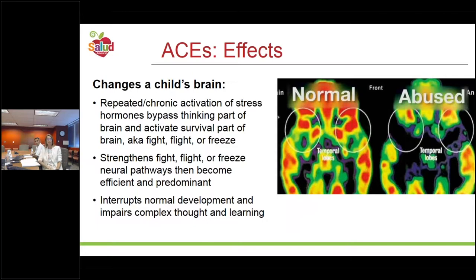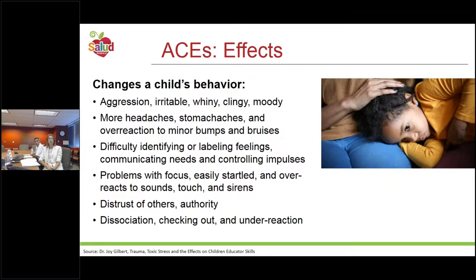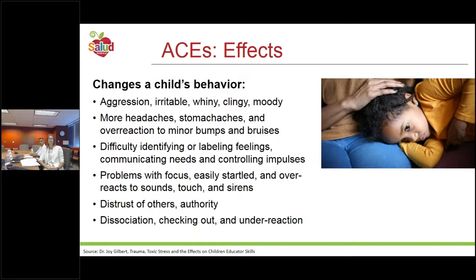These kids are chronically in a fight, flight, or freeze survival state, which impairs their brain development and activity. It strengthens neural pathways that become more efficient and predominant, interrupting development, impairing complex thought and learning, and reducing higher cognitive functioning. It also changes the child's behavior — children facing childhood trauma and toxic stress tend to display more aggression, irritability, mood swings, and are clingy or whiny. They also tend to have more physical ailments like headaches and stomachaches, and have difficulty with social-emotional communication and managing conflicts.